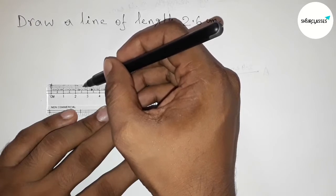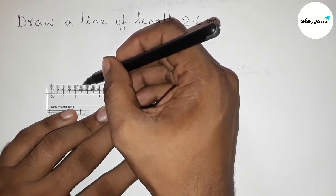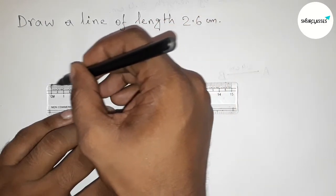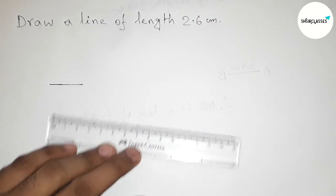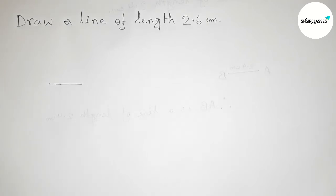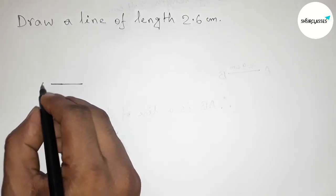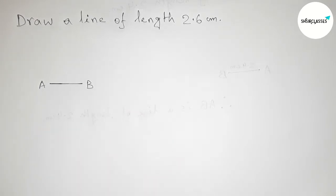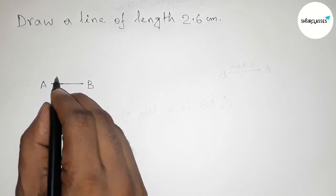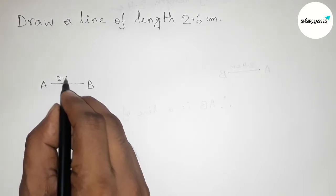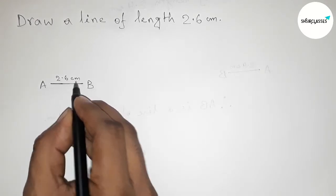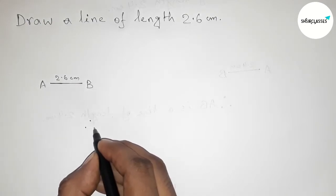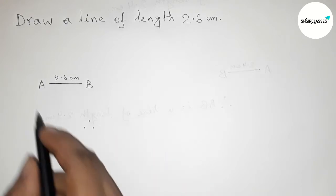Now joining this line and taking two points. So here taking point A and here taking B. So AB is a line of length 2.6 centimeter, okay? So therefore here AB is a line of length 2.6 centimeter.